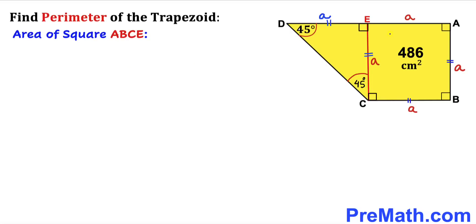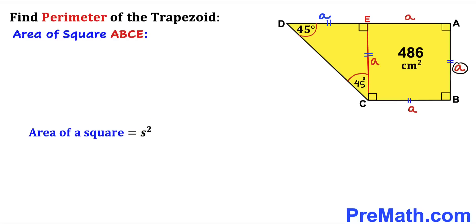Let's calculate the area of square ABCE. Recalling the area of a square formula: area equals S squared, where S is the side length. In our case the side length is a, so the area of square ABCE — let me represent it as A₁ — is going to be a squared.